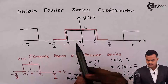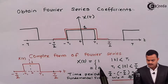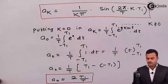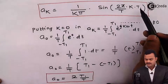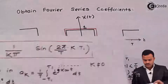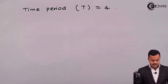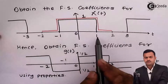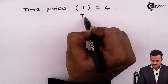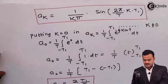The waveform exists from minus 1 to 1, so in this case that is minus T1 to T1. We are doing this because straight away we are going to use the already-obtained AK for this particular waveform, using it directly by selecting the values of capital T and capital T1. We have decided the time period is 4 and the waveform exists from minus 1 to 1, so capital T1 is 1.